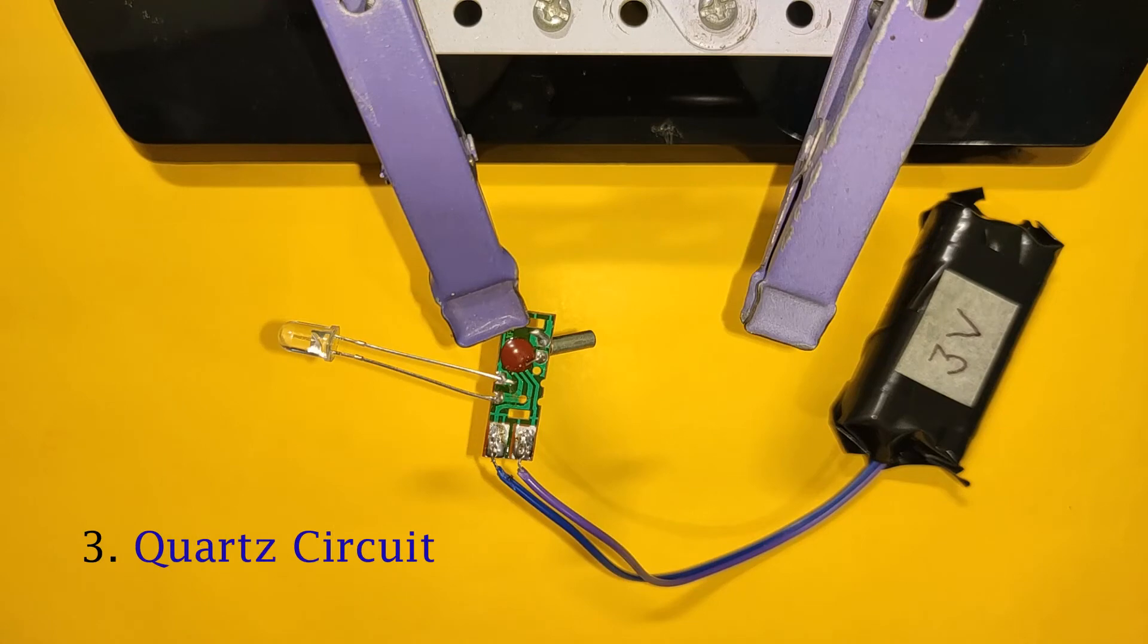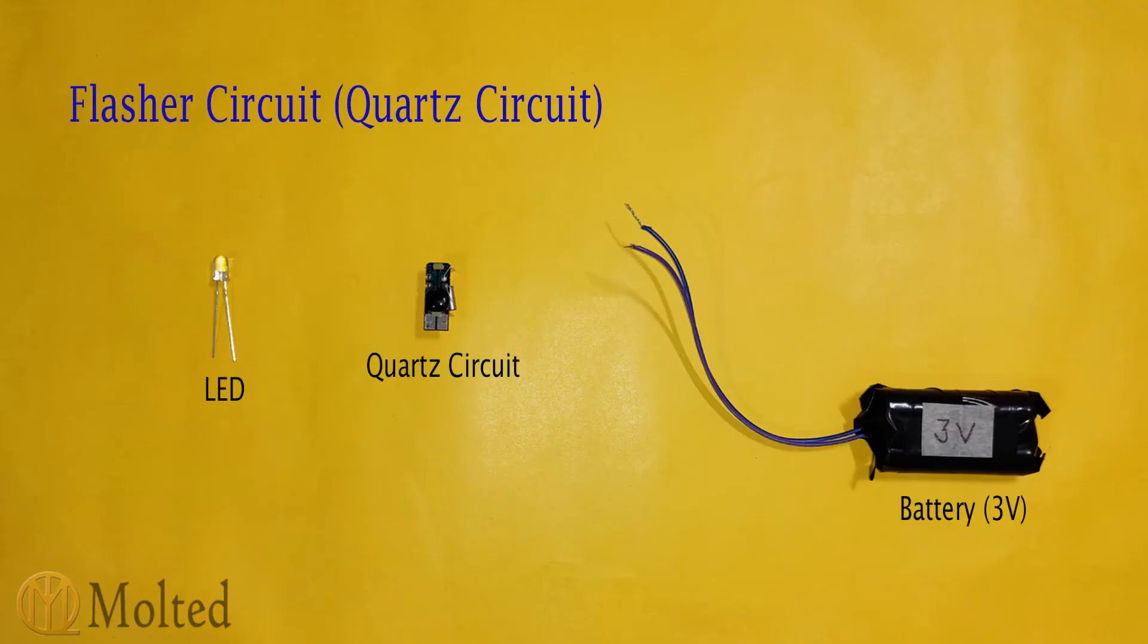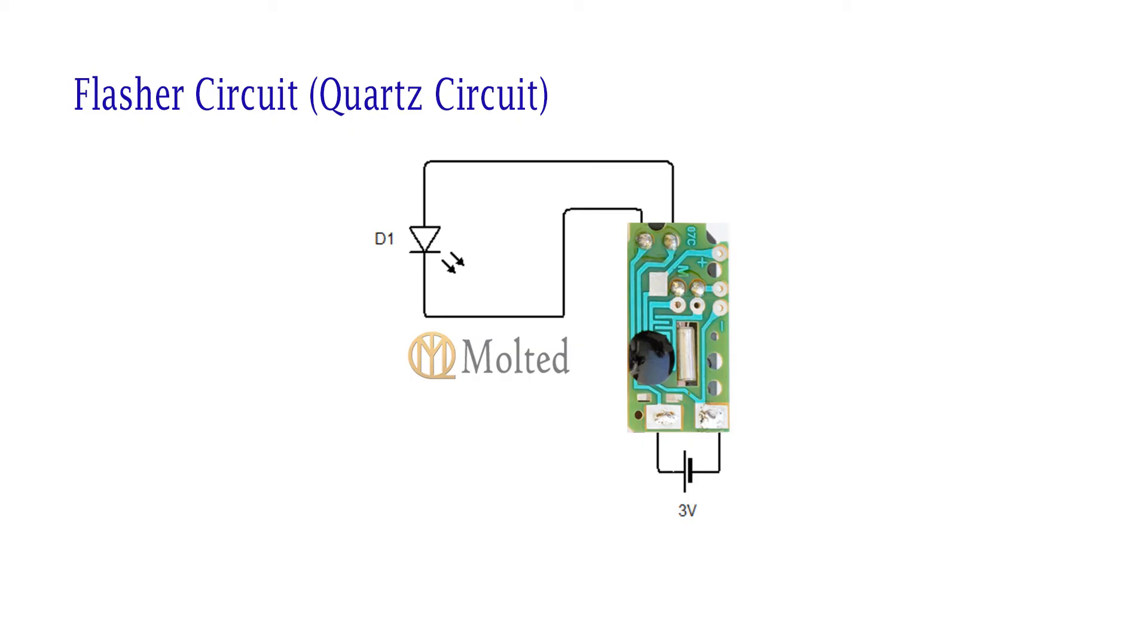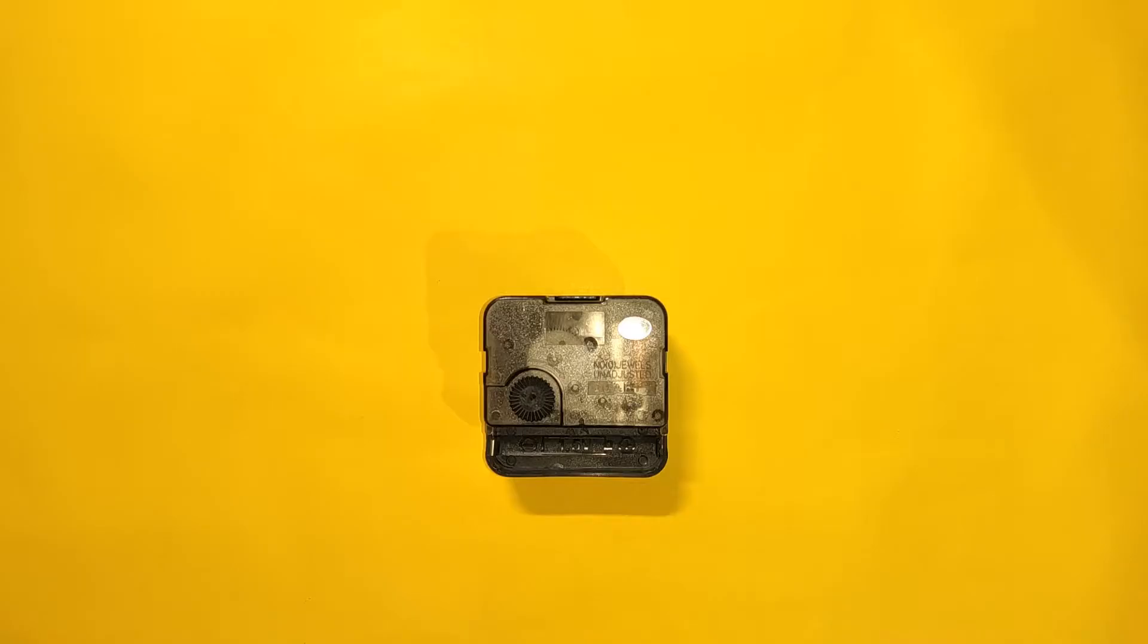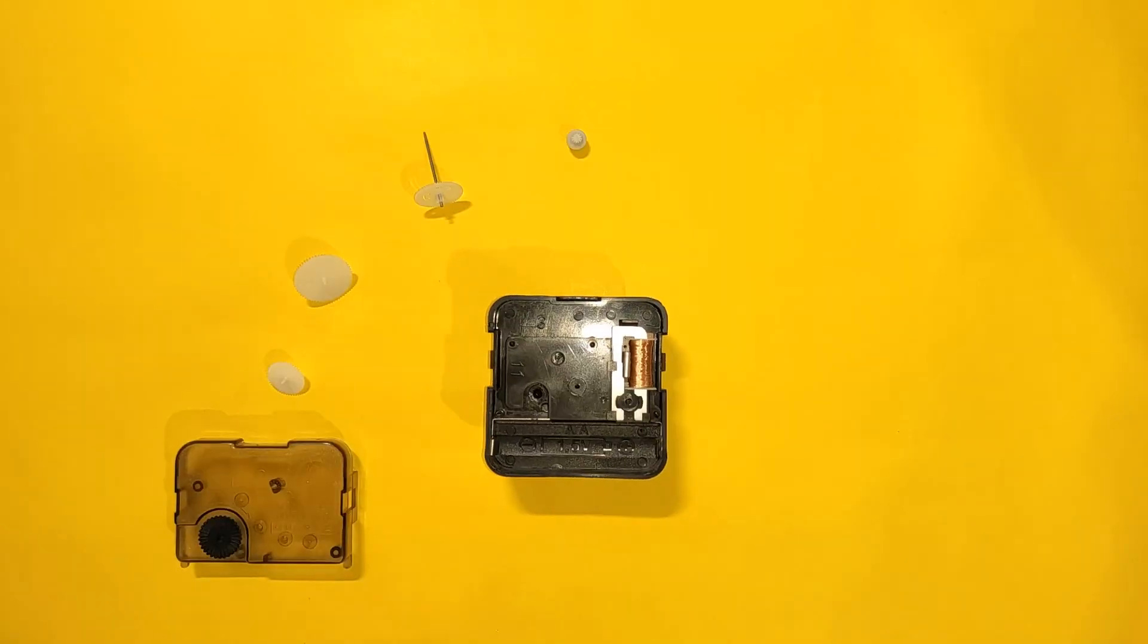Last circuit is by using quad circuit. These are the components required and this is the circuit diagram. You can get this quad circuit from a wall clock mechanism.